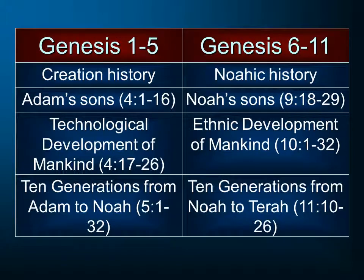When we count the generations given in Genesis chapter 11, following the Tower of Babel narrative, we're going to see again ten generations, this time going from Noah to Terah. Notice we had ten generations from Adam to Noah, who is followed by three sons. Again, we're going to see ten generations from Noah to Terah, who likewise will be followed by three sons.